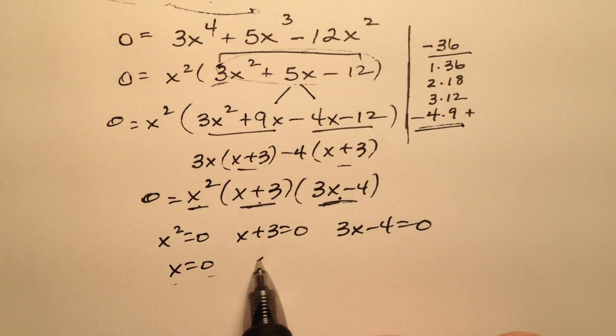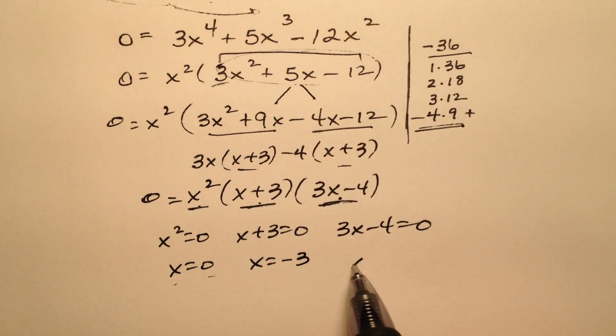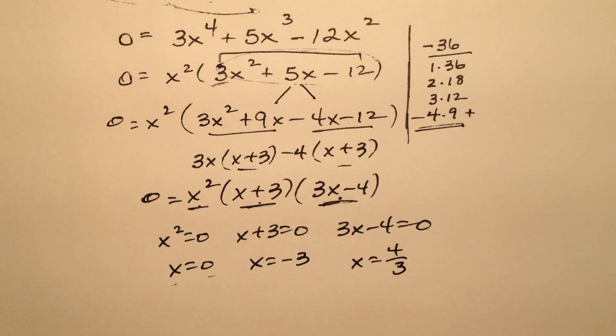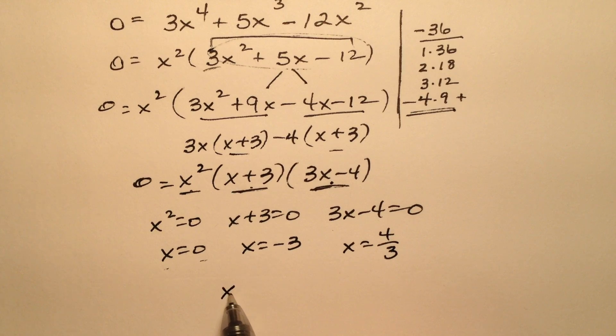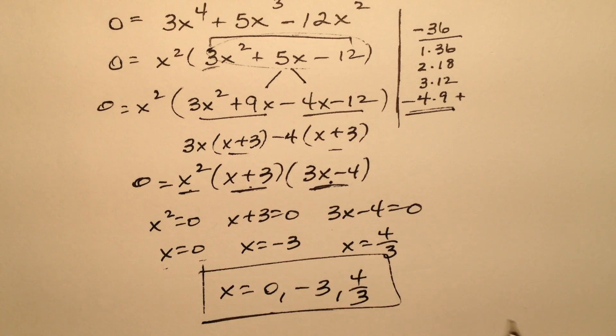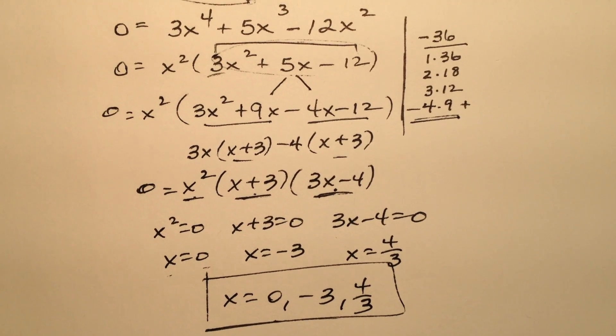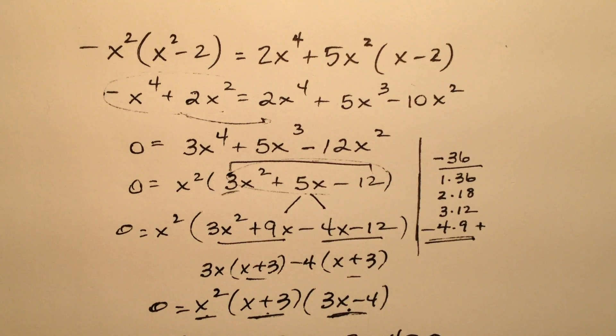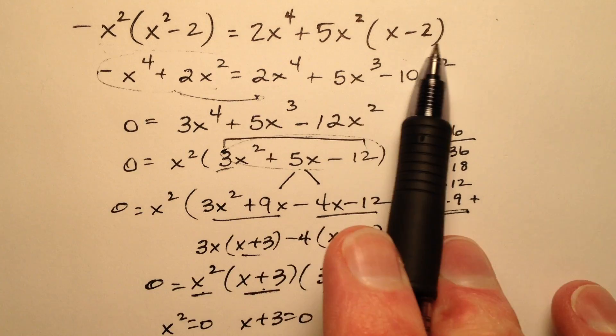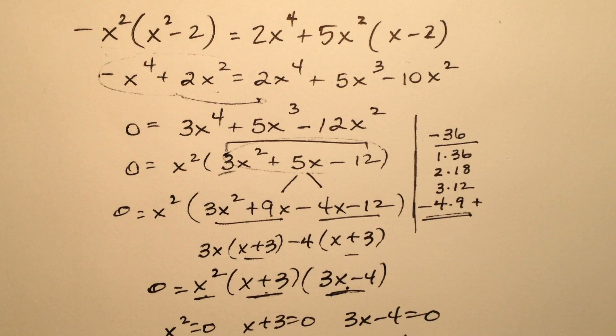This will yield 0, this will yield negative 3, and this will yield positive 4 thirds. So my solutions to this equation are 0, negative 3, and 4 thirds. Those are the solutions for this original quartic equation.